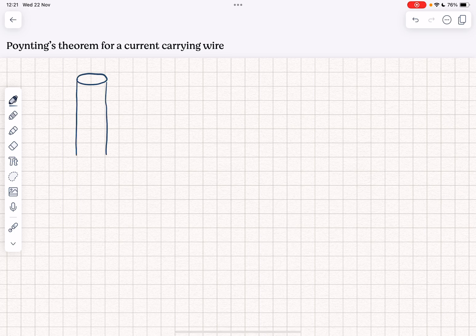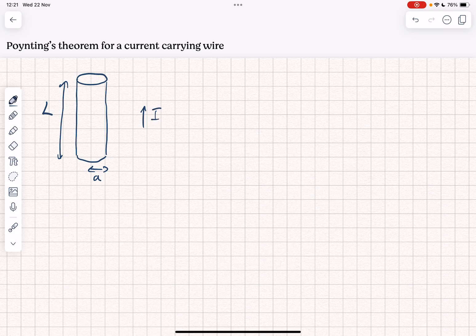I'm going to draw it here so we have a length L, we have a radius A, the current I is flowing along the wire and there is a potential difference across the wire of V.